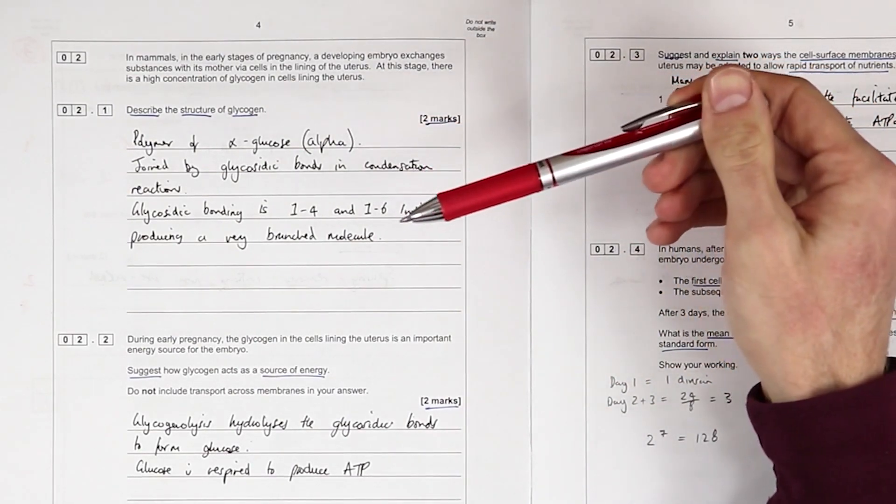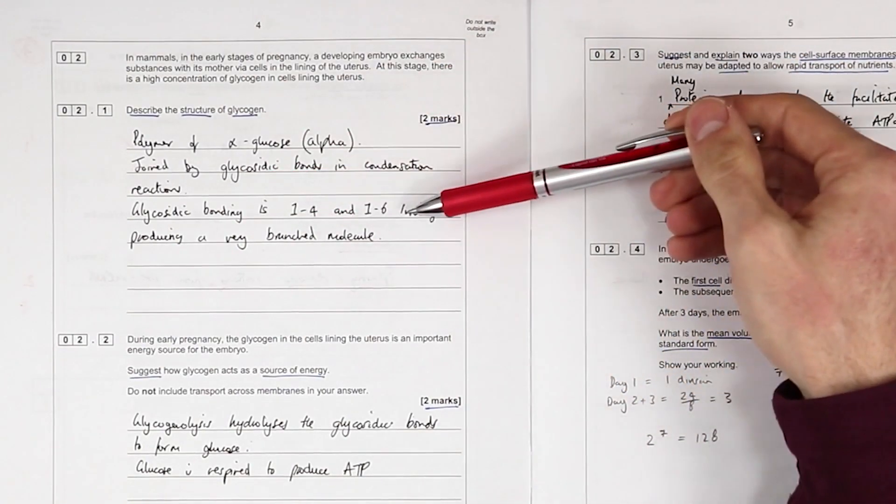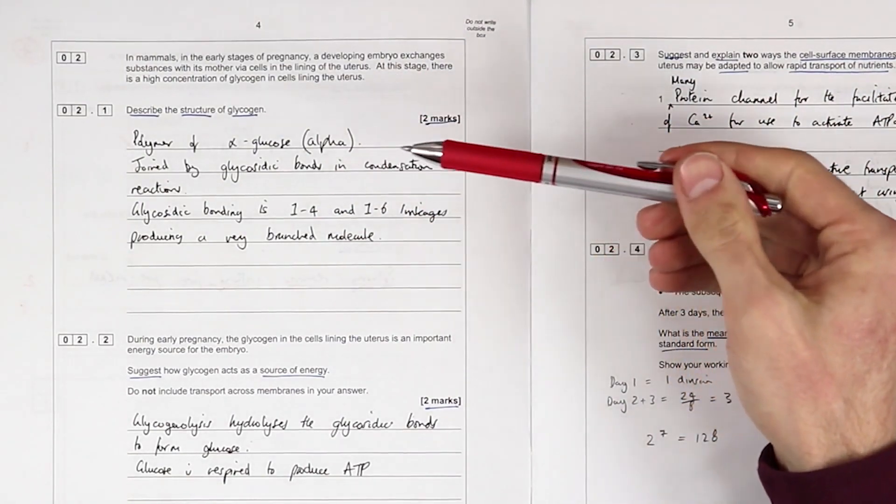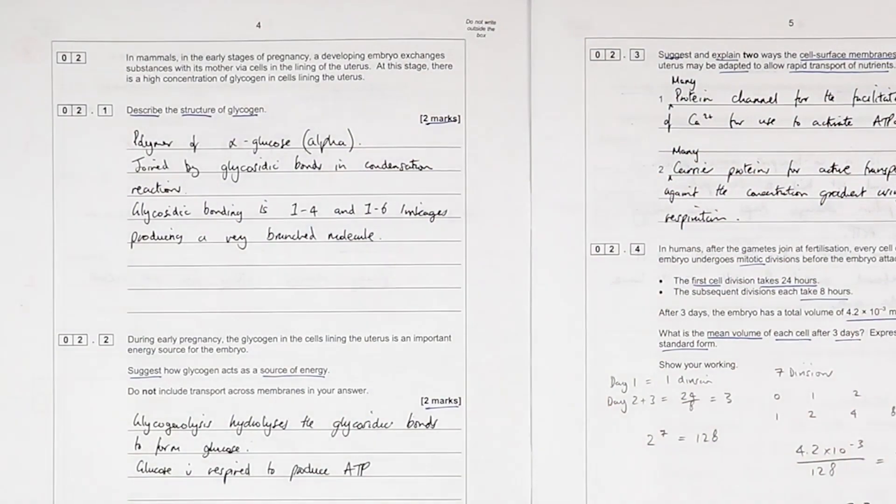Literally I don't check the mark scheme in advance, I do this live so you can get my live reaction. The type of bonding and it's branched: alpha glucose, glycosidic bonds, condensation reaction, 1,4 and 1,6 linkages, branched molecule.